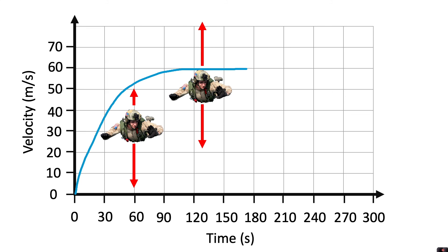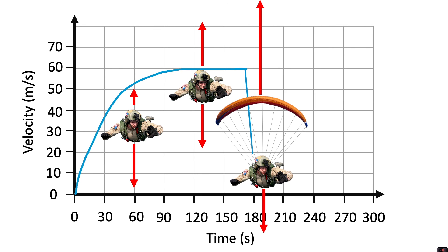And then the parachutist will deploy the parachute and their velocity, or their speed, will decrease rapidly. And that's because the air resistance is much greater than the weight. They are experiencing unbalanced forces.